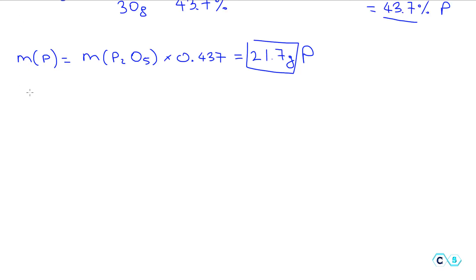For the second approach, we can write down that every 142 grams of the phosphorous oxide contains how many grams of phosphorus. The molar mass of the phosphorus is 31, we have 2 phosphorous, we can write down 62 grams just based on the masses. 142 grams contains 62 grams of phosphorus.